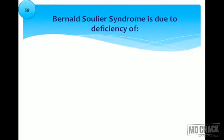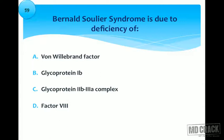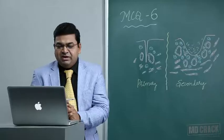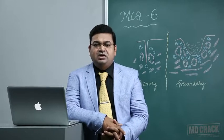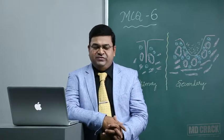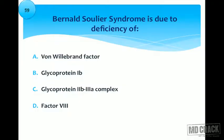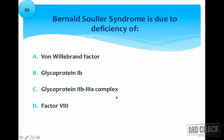Bernard-Soulier syndrome is due to deficiency of which of the following? Options: von Willebrand factor; glycoprotein 1B; glycoprotein 2B3A complex; factor 8. Von Willebrand factor deficiency is von Willebrand disease; factor 8 deficiency is hemophilia. That leaves glycoprotein 1B or glycoprotein 2B3A complex. Bernard-Soulier syndrome is due to deficiency of glycoprotein 1B.